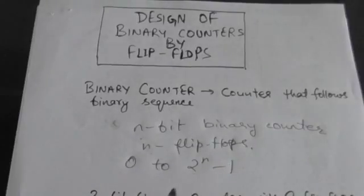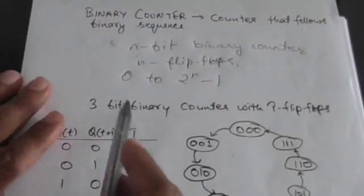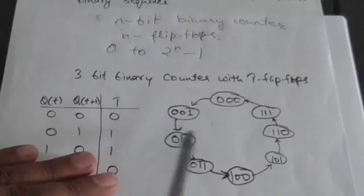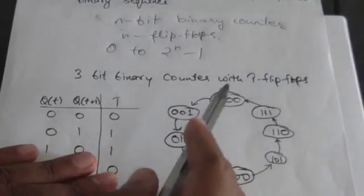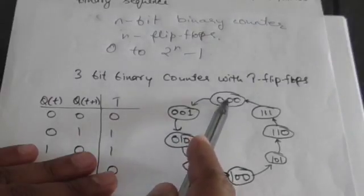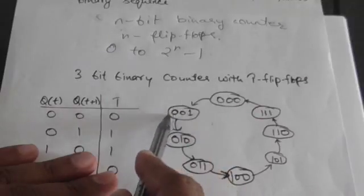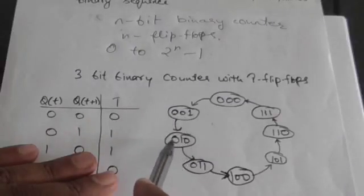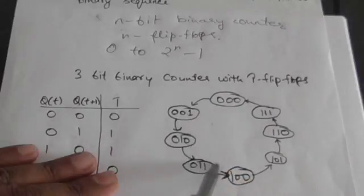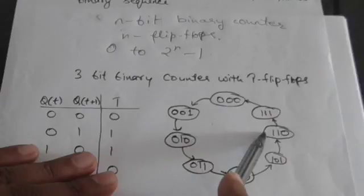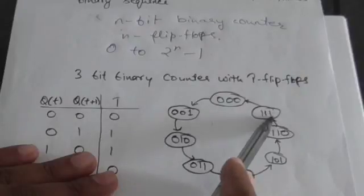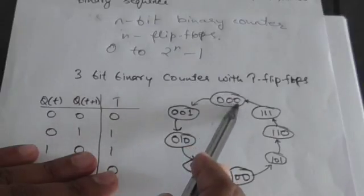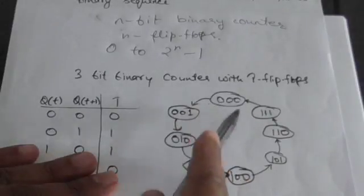Now we will design a 3-bit binary counter with T flip-flops. This diagram shows the working of the 3-bit binary counter. If the present output is 0 0 0, the next output should be 0 0 1. If the present output is 0 0 1, the next output should be 0 1 0. Similarly, if the present output is 1 1 0, the next output should be 1 1 1, and if the present output is 1 1 1, the next output should be 0 0 0.